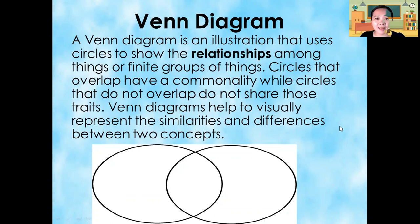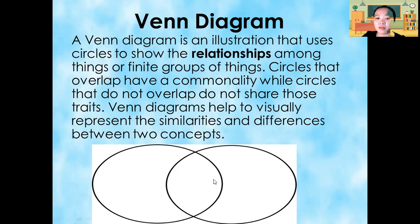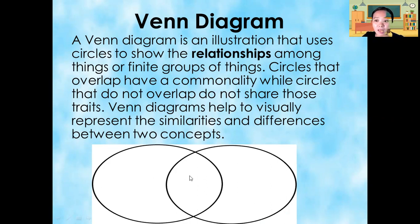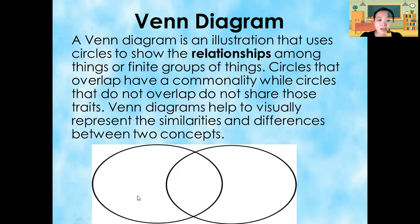When comparing different animals, we're going to use a Venn diagram. A Venn diagram is an illustration that uses circles to show the relationship among things or finite groups of things. Circles that overlap have a commonality, while circles that do not overlap do not share those traits. If it is inside the overlapping part, it means both animals have the same traits. Venn diagrams help to visually represent the similarities and differences between two concepts.